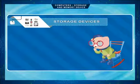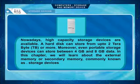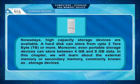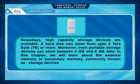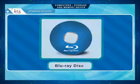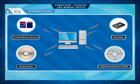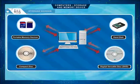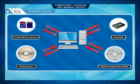Nowadays, high-capacity storage devices are available. A hard disk can store up to 2 TB or more, and even portable storage devices can store between 4 GB and 8 GB of data. Common storage devices include hard disks, pen drives, CDs, DVDs, and Blu-ray discs. Storage devices provide a location where data can be stored when it is not being processed. A computer can read and input data from storage devices for further processing, and can also store processed information onto these devices.